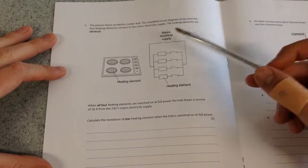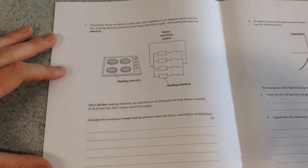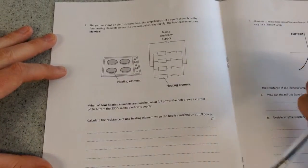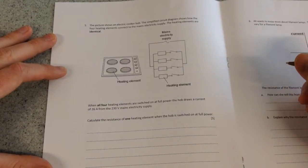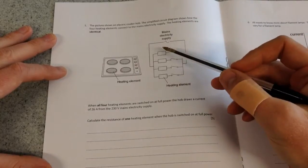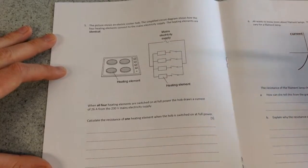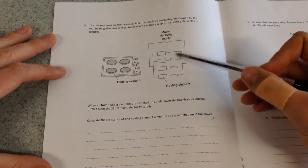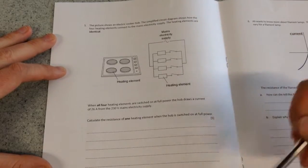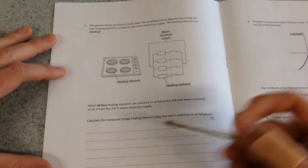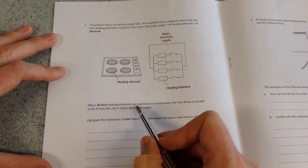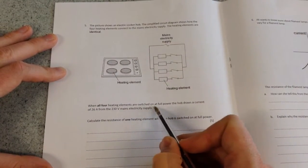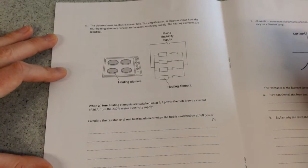So we have this circuit which is modelling the four heating elements, the four hobs. And each of those hobs has a resistance and it's an equal resistance. Each is provided with a switch so you can turn one on at a time. But here in the question it says all four heating elements are switched on and they are at full power.